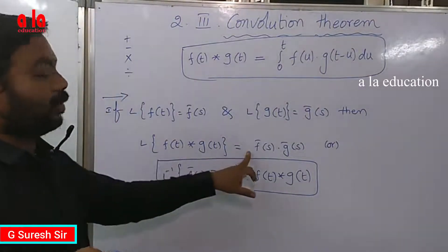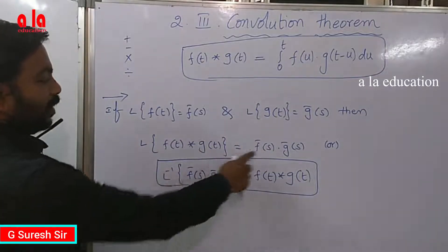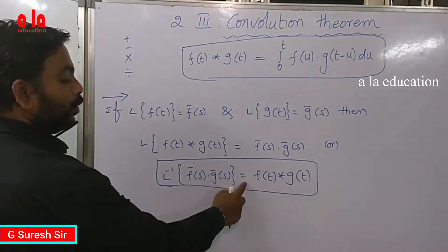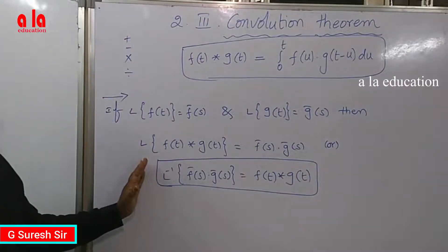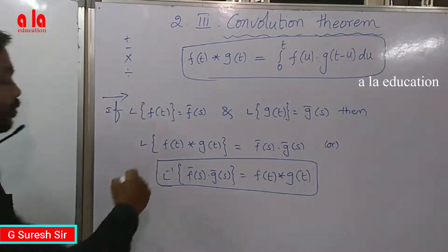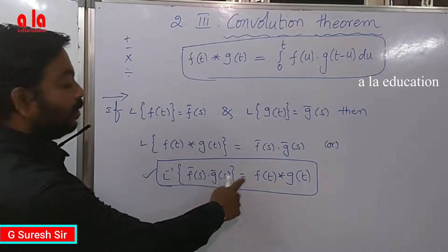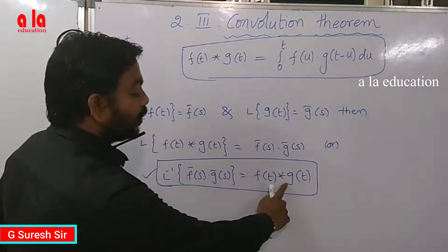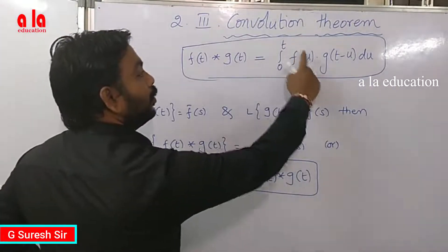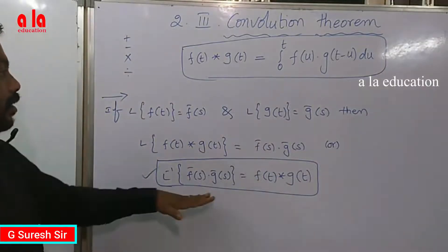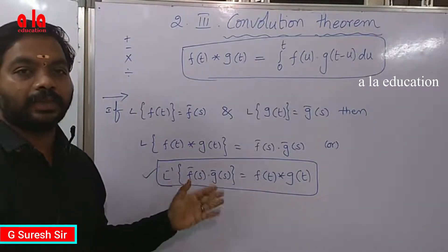This is the Laplace transform of f(t). So the Laplace transform of f(t) into Ḡ(s) is equal to f(t) convolution product g(t). What is f(t) convolution product g(t)? It is the integral from 0 to t of f(u) g(t minus u) du. This is called the convolution theorem, and its advantage is the concept derived from f(t).